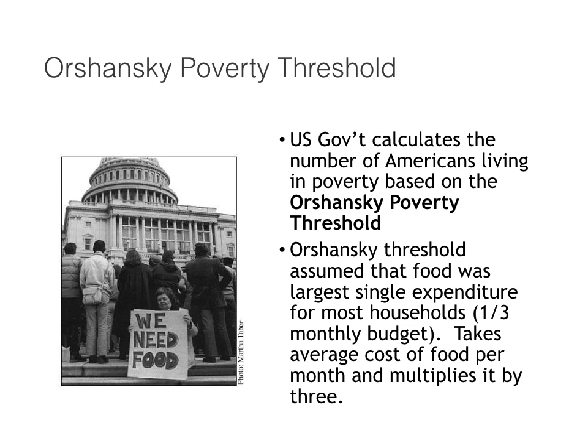The Orshansky Poverty Threshold was developed in the 1960s by an American economist and statistician named Molly Orshansky, who was asked to come up with a simple formula to measure what percentage of the American population could be considered officially poor. Orshansky studied household budgets and noticed that food was the largest single expenditure for most households — it took up about a third of the average household's monthly budget. So she did something very simple: she took the average cost of food per month for households of particular sizes and multiplied it by three, figuring that if you had enough money to cover your biggest expense times three, that should give you enough to cover everything else — housing, medical care, etc.